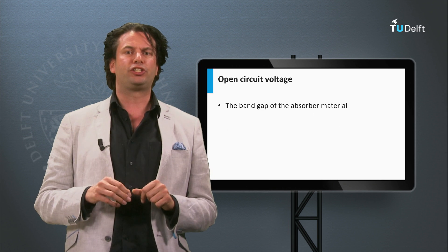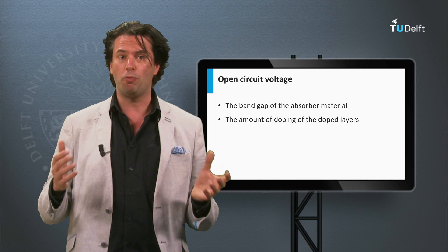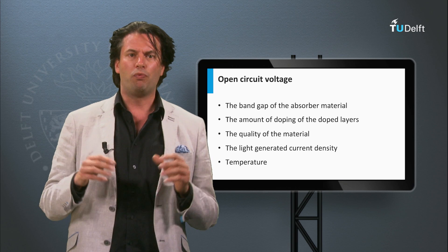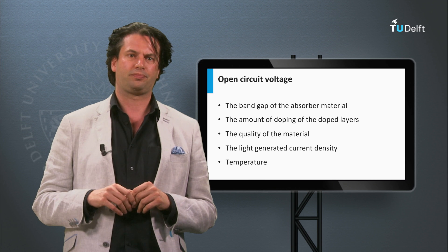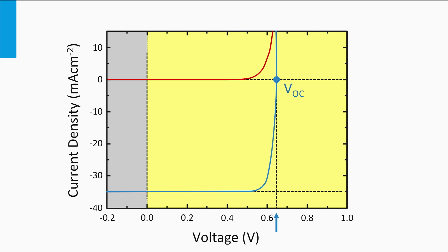The open circuit voltage depends on other factors as well, such as the band gap of the absorber material, the amount of doping of the doped layers, and the quality of the material — or in other words, the defect density. We will come back to these relations later during the course. If we short circuit both terminals of the solar cell, the illuminated solar cell will solely produce a current and will produce no voltage. This current density is called the short circuit current density, and it can easily be recognized in the JV curve as the intersection between the vertical line corresponding to zero voltage and the JV curve.